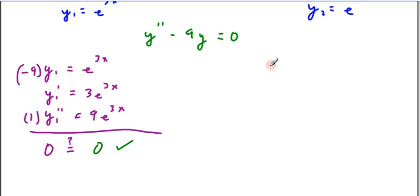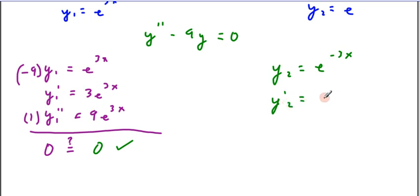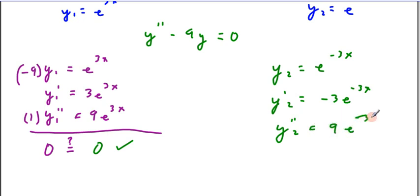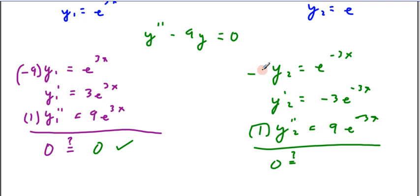Now checking the second solution y2 equals e to the minus 3x. y2 prime is minus 3e to the minus 3x, and y2 double prime is 9e to the minus 3x. Substituting into y double prime minus 9y: one of the double prime term minus 9 of the original gives 9 minus 9 equals 0. Check — those are in fact both solutions to this differential equation.